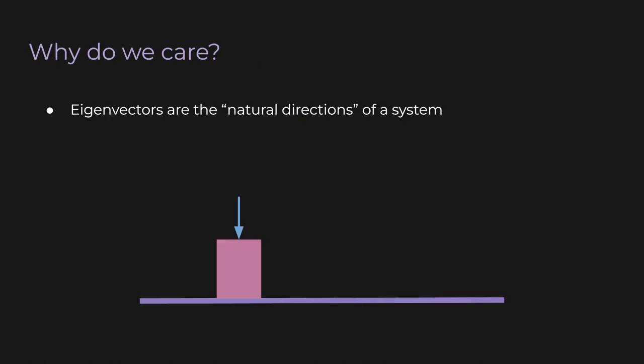Well, if we can represent a system by a matrix, then the eigenvectors are the natural directions of the system. For example, imagine we have a uniform rubber cube sitting on a table, and we apply a force straight down at the center of the top face. The cube will obviously deform downwards, but it'll probably deform evenly. The top face will remain perpendicular to the force, and the center of mass will move straight down — a scalar multiple of the input vector, an eigenvector.